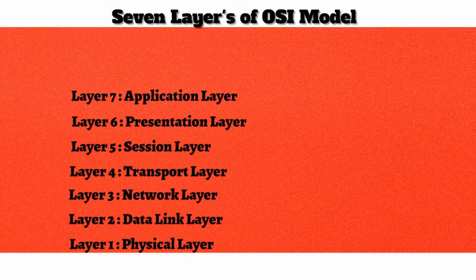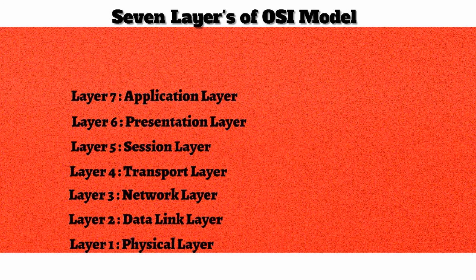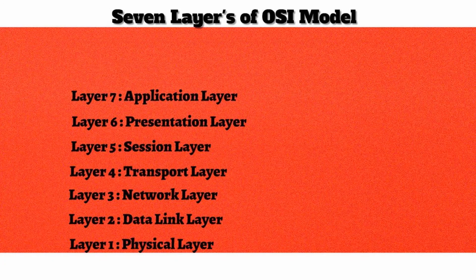At the presentation layer, layer 6, we are concerned about how data is represented on the network. For example, we might format a block of text using ASCII. Another function of the presentation layer is encryption — we might want to scramble our data before sending it over an untrusted network like the internet, so that a malicious user who intercepts it cannot read it, while the intended recipient can decrypt it. And up at the top we have layer 7, the application layer.